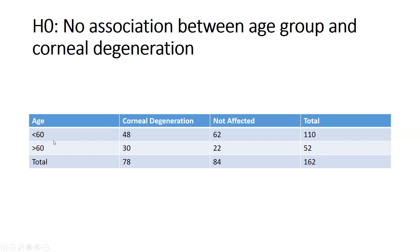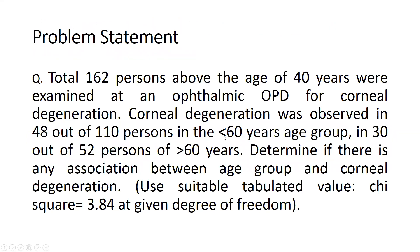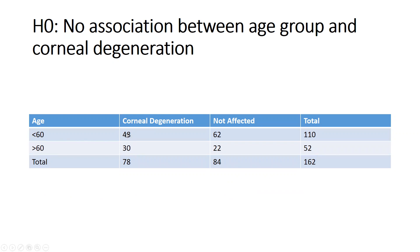We set up the contingency table with two age groups: less than 60 and greater than 60. For the less-than-60 group: 48 with corneal degeneration, 62 not affected, total 110. For the greater-than-60 group: 30 with corneal degeneration, 22 not affected, total 52. Overall totals: 78 with corneal degeneration, 84 not affected, out of 162 total.